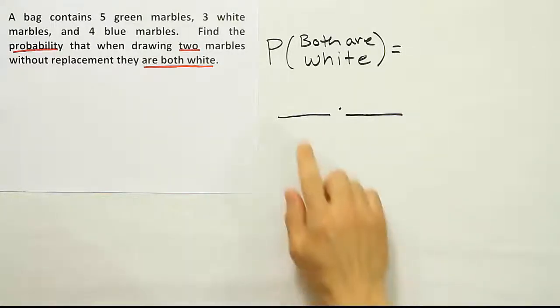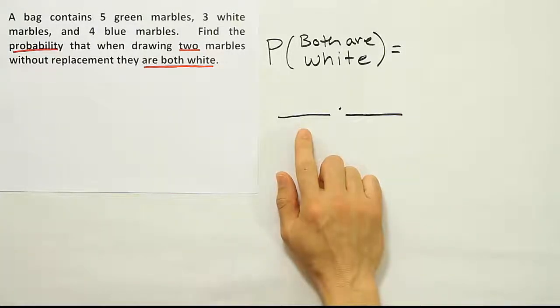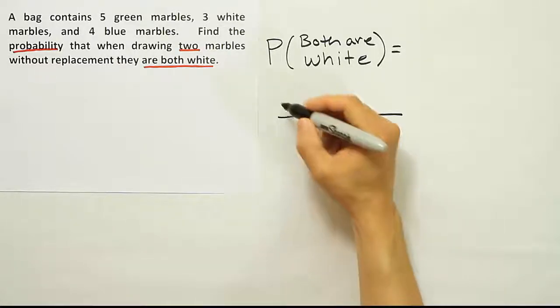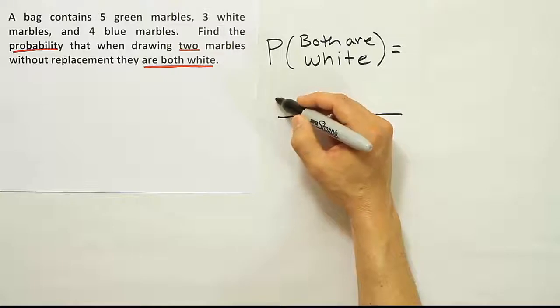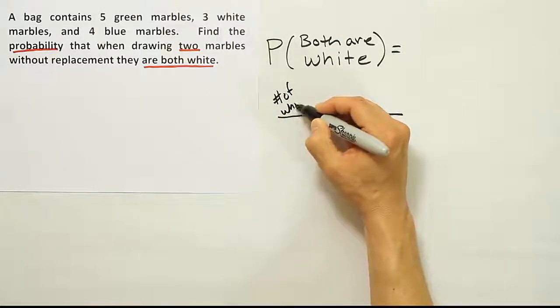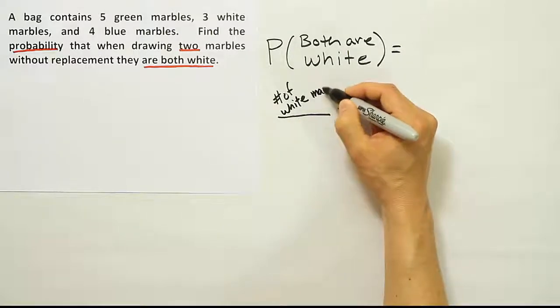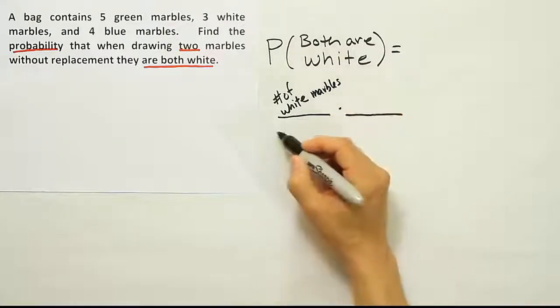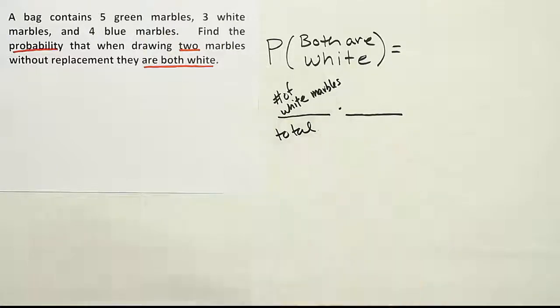Well, I'm going to say that this is going to be the probability that the first marble I take from the bag is white. So it's going to be the probability first is white. Using basic probability, it's going to be the number of white marbles over the total in the bag. Number of white marbles over the total in the bag.